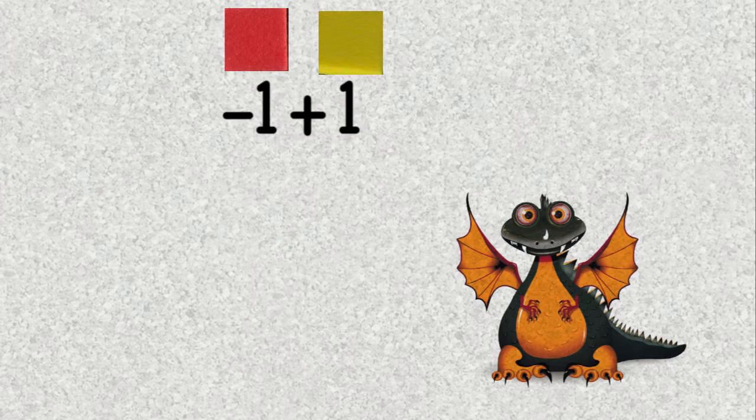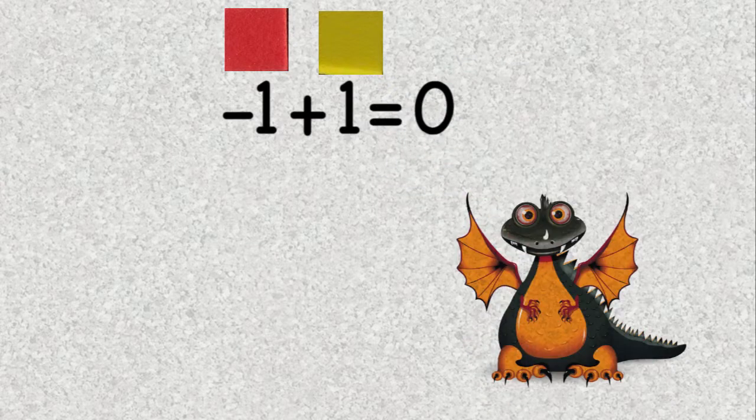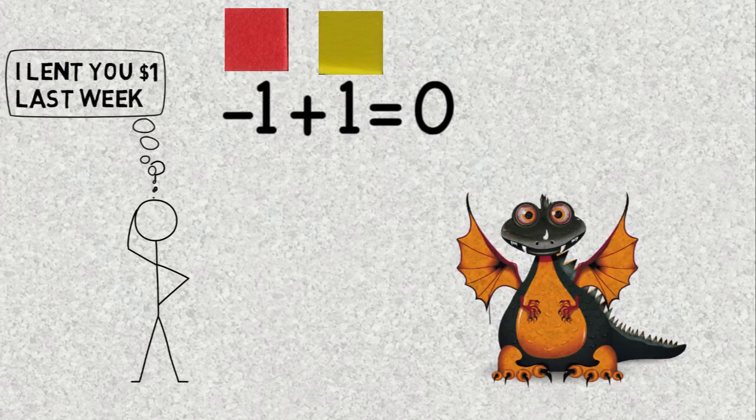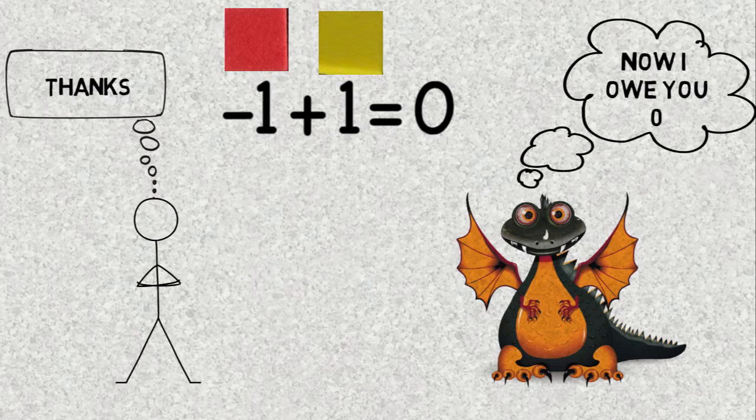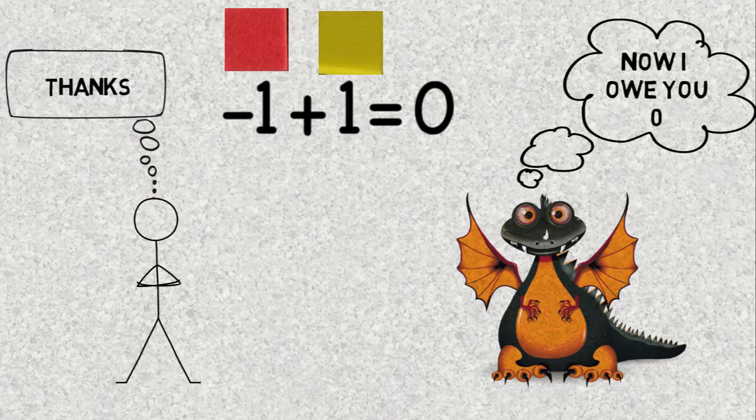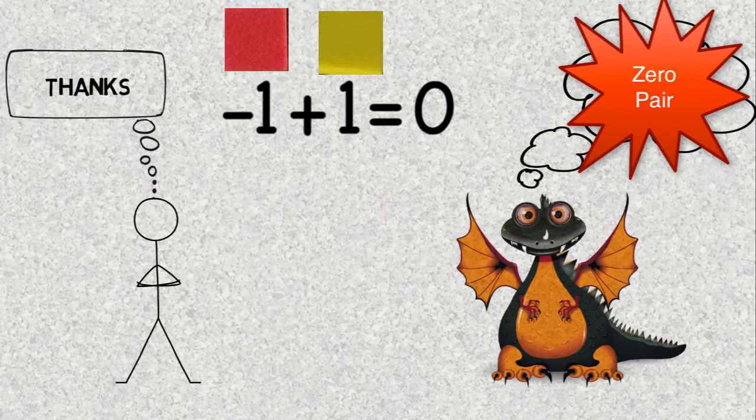So if I had the problem negative 1 plus 1, that would equal 0. I could look at that as saying I owed you a dollar, and then I paid you a dollar. So how much do I owe you? Zero, of course. With algebra tiles, when you have a negative tile and a positive tile, we refer to them as a zero pair, because they cancel each other out.